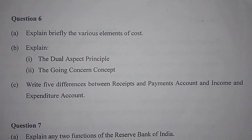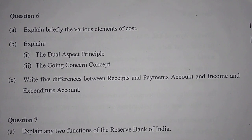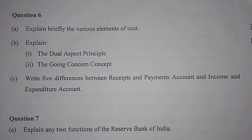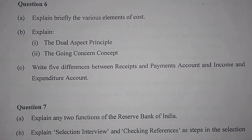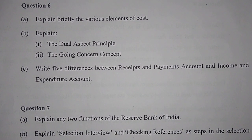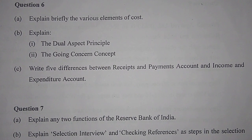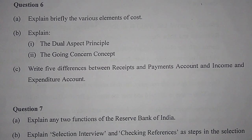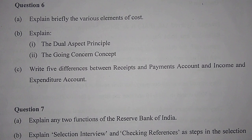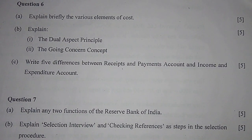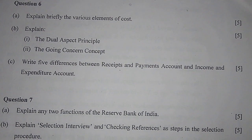Question 6b: Explain the dual aspect principle and the going concern concept. The dual aspect principle suggests that every debit has a corresponding and equal credit. For example, if X buys a car for rupees 3 lakh, the car account is debited with 3 lakh and the cash account is credited with 3 lakh. The going concern concept states that transactions are recorded as if the business is going to last forever.